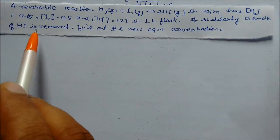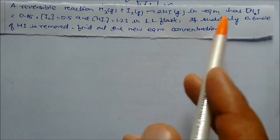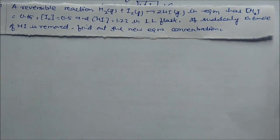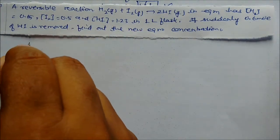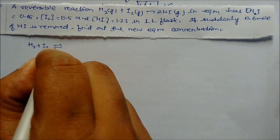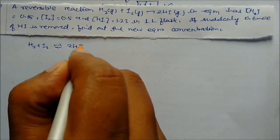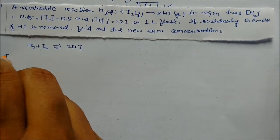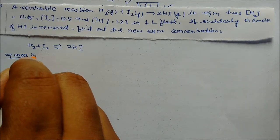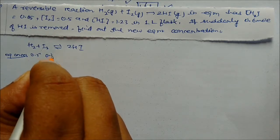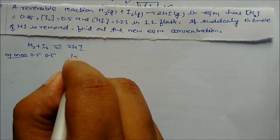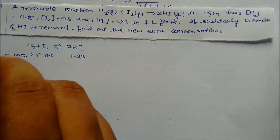If suddenly 0.6 mol of HI is removed, what is the new equilibrium concentration? So we have H₂ + I₂ giving 2HI. The equilibrium concentrations are: H₂ = 0.5, I₂ = 0.5, and HI = 1.23.